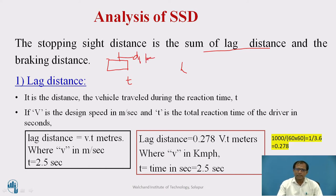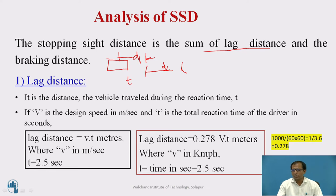Once the driver decides the action to be taken, after traveling distance d1 he will apply the brake. After application of the brake, the vehicle will continue for a skidding distance, called the braking distance, d2. So stopping sight distance equals d1 plus d2, that is lag distance plus braking distance. Lag distance: given vehicle speed v and reaction time t, lag distance equals v multiplied by t. If speed is in meters per second, it is simply v × t.